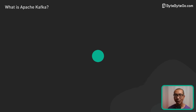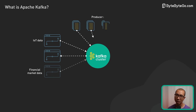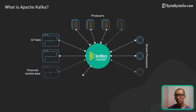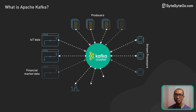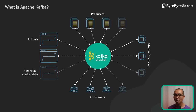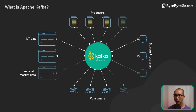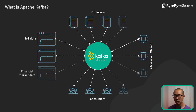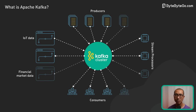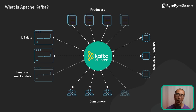Last but not least, Kafka enables scalable stream processing of big data through its distributed architecture. It can handle massive volumes of real-time data streams — for example, processing user click streams for product recommendations, detecting anomalies in IoT sensor data, or analyzing financial market data.